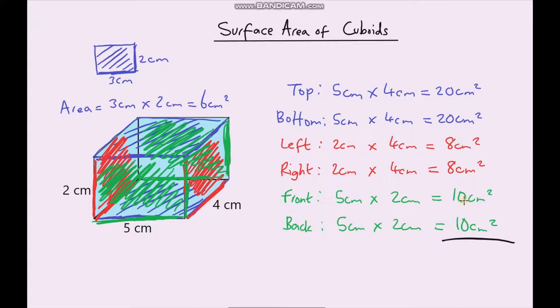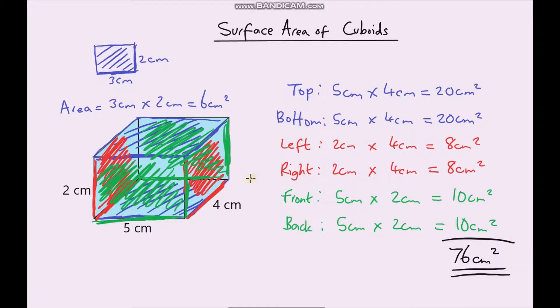40 plus another 20 gives us 60. 60 plus 16, that gives us 76. So it's 76cm², and that is the total surface area of this cuboid.